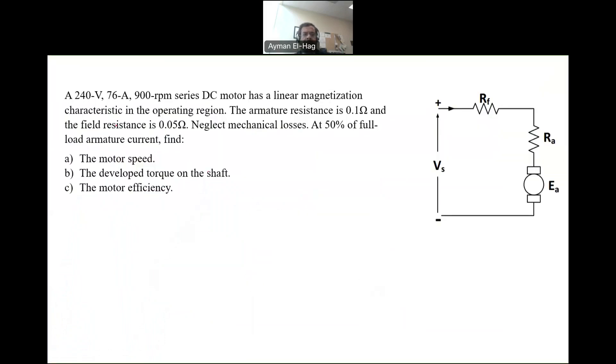In this question, we have a series DC motor, meaning that the field winding and the armature winding are connected in series. We are given the rated values of the motor, so we have Vs equal to 240 volts. This is the terminal voltage. We have Ia, the armature current, which is the field current, equal to 76 amps, and the speed is equal to 900 rpm.